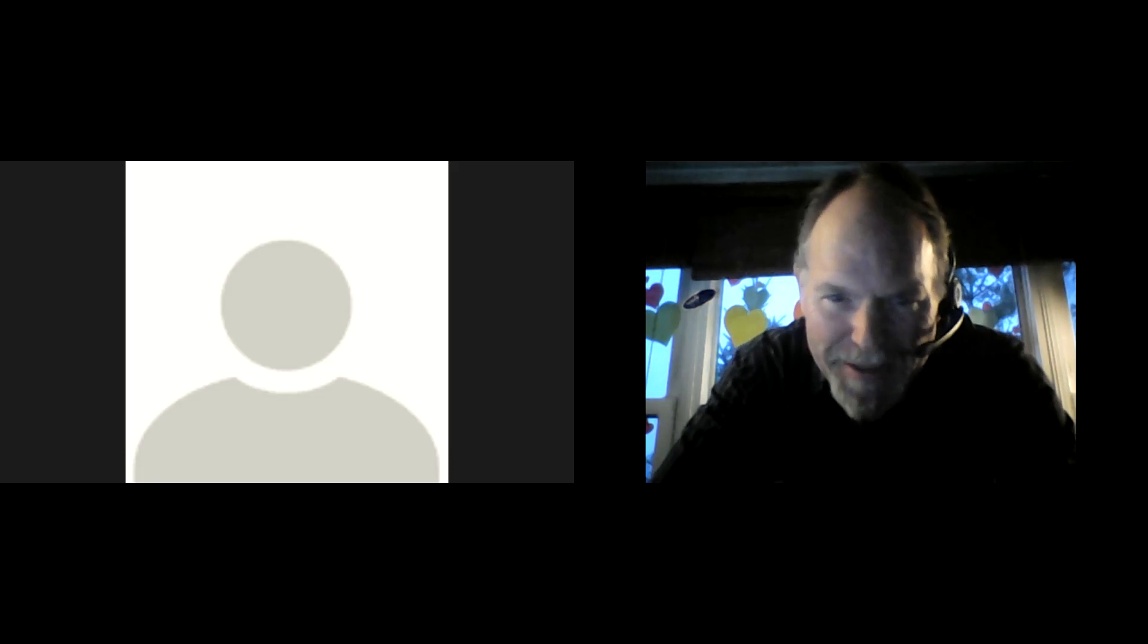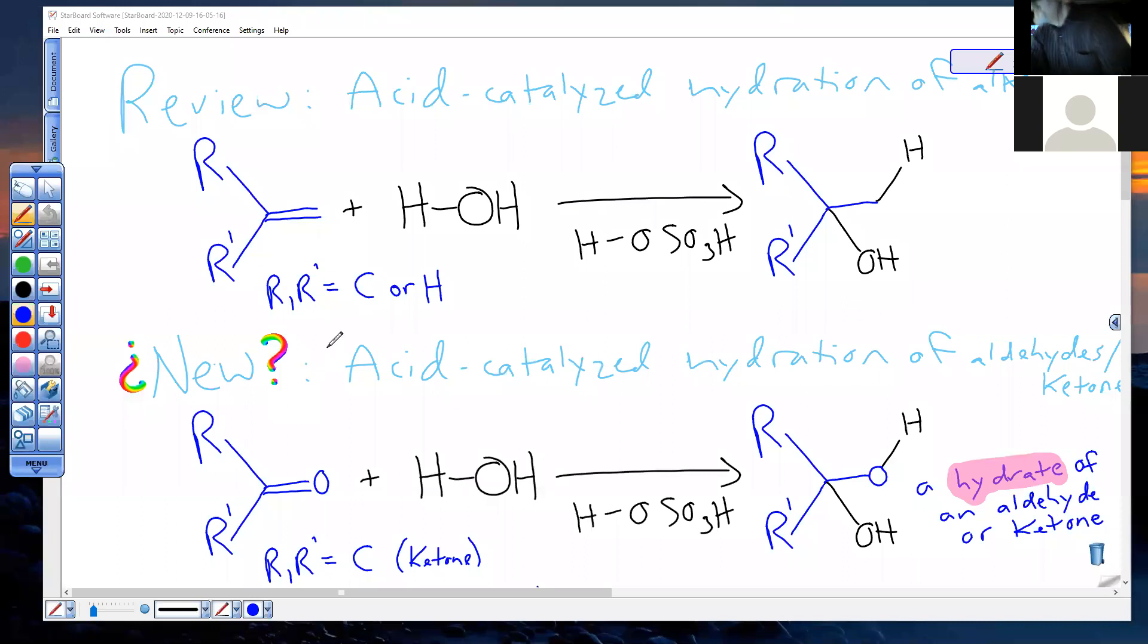Greetings, everybody. Welcome to our last Wednesday lecture for this semester. We'll start by looking at an old reaction and seeing it relate to a new reaction. In Chapter 6, we learned about the acid-catalyzed hydration of alkenes. We learned that we're going to protonate our alkene using the pi electrons with a strong acid. That doesn't change if you change to a carbonyl compound, such as an aldehyde or a ketone.